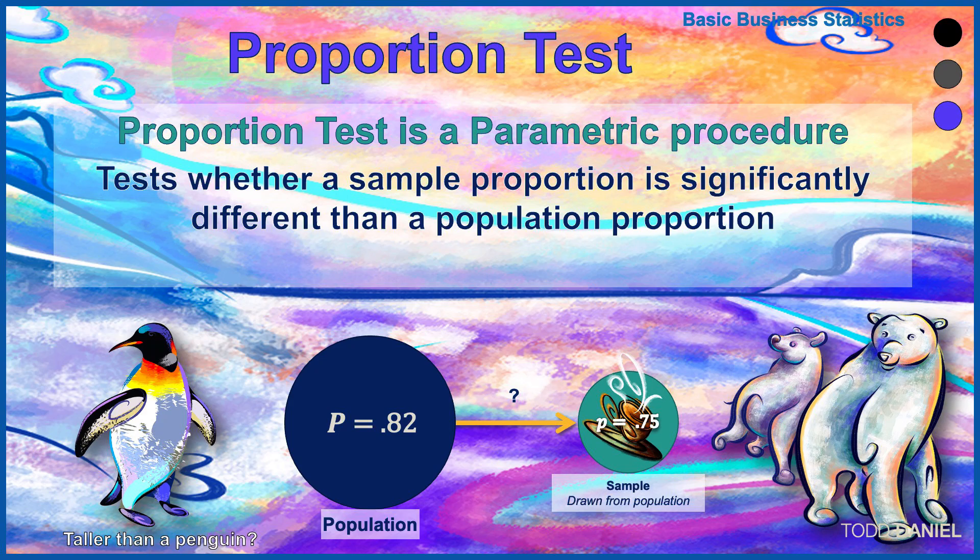The proportion test is a parametric procedure, which means we'll be using a population parameter. It tests whether a sample proportion is statistically significantly different than a population proportion. Following similar examples with polar bears, we have discovered that some polar bears are taller than a penguin, others are not. In fact, in the population, 0.82 or 82 percent of polar bears are taller than a penguin. We draw a sample from this population and determine that 0.75 or 75 percent of our sample are taller than a penguin. We want to know whether that sample is statistically significantly different than the population proportion, or whether that difference exists solely due to chance.